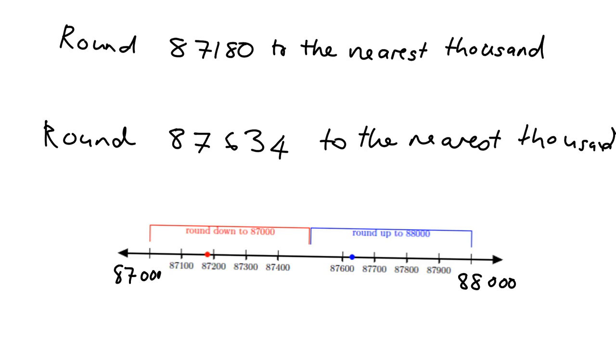What's the halfway point between those two? Well, what's half of 1,000? It's 500, so it's 87,500. Just as before, anything that lies below the halfway point, below 87,500, will go down to 87,000. And anything above that 500 point will round up to 88,000.